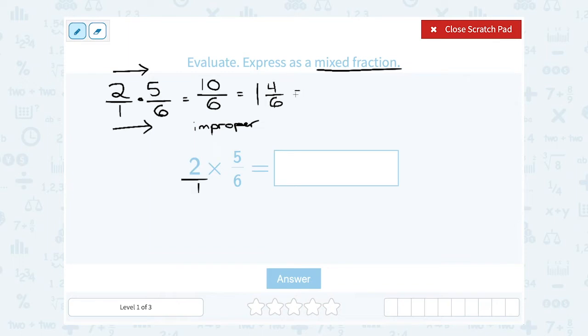I can actually simplify this even a little bit more because I can reduce the 4 over 6 part. 2 goes into both of these numbers. They're both even numbers. I can think of 4 as 2 times 2 and 6 as 2 times 3. If I cancel the common factor of 2, we had a whole number of 1, and the fraction part 4 over 6 would reduce to 2 over 3. So as a mixed fraction in lowest terms, I would have 1 and 2 thirds.